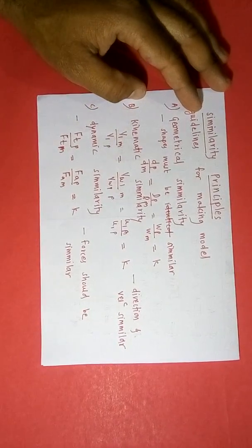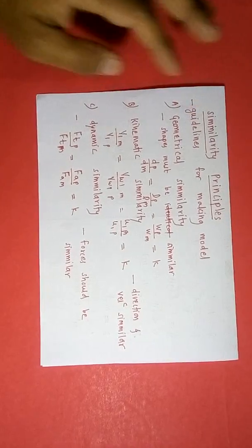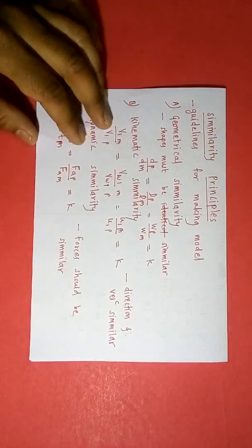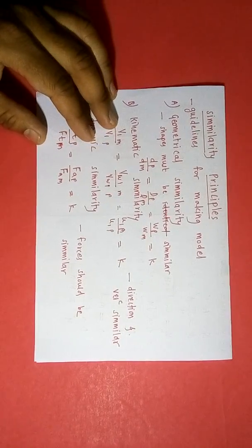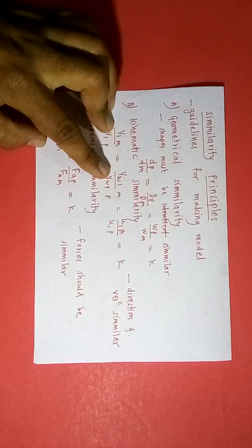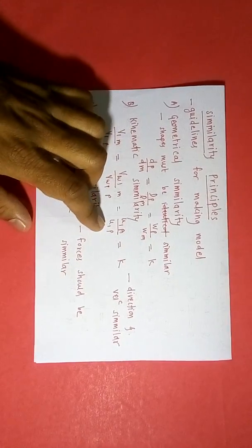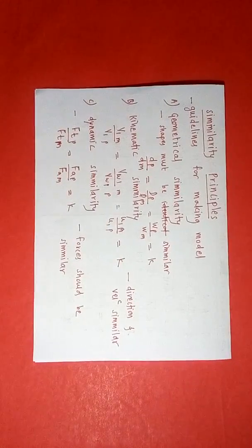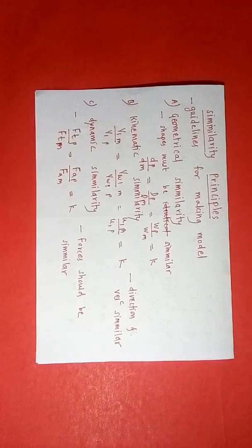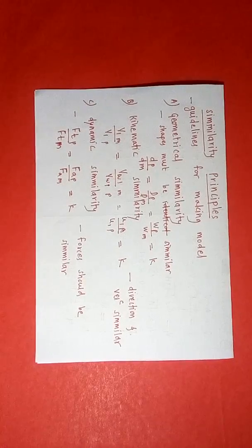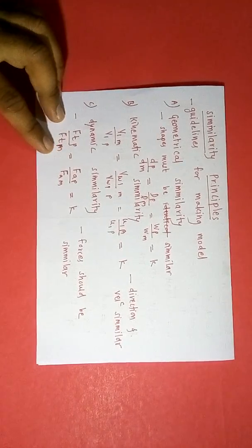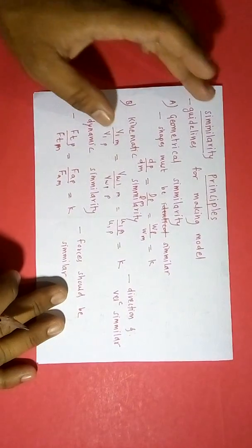Kinematic similarity is related to velocity. Since velocity is a vector quantity, we must consider both direction and magnitude. This similarity implies that the ratio of velocities at different points — such as jet velocities — for model and prototype should be constant. Dynamic similarity is related to forces. It states that tangential forces, axial forces, and inertial forces should have the same ratio at various points for model and prototype.